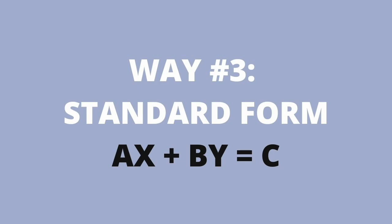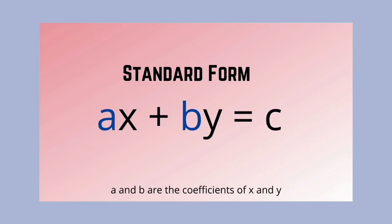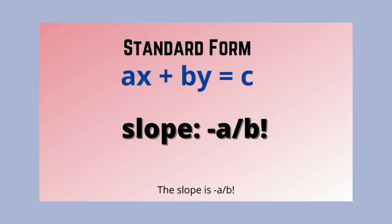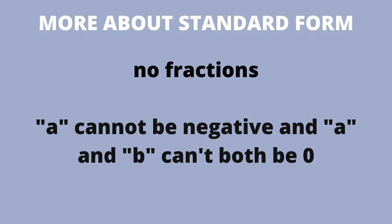Lastly, here's standard form: Ax + By = C. A and B are the coefficients of x and y. The slope is -A/B. Keep in mind you cannot have fractions and A cannot equal zero. That wraps up three forms of linear equations.